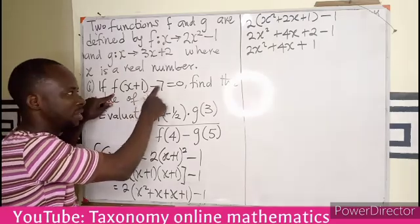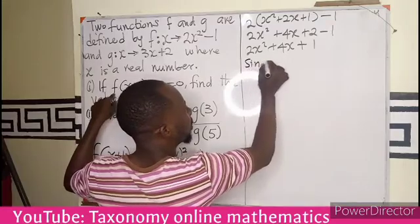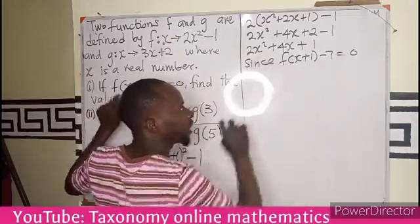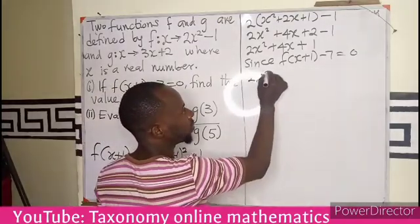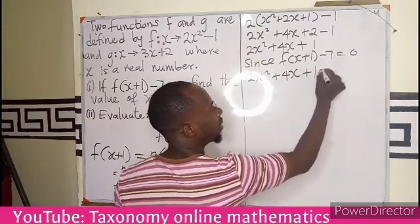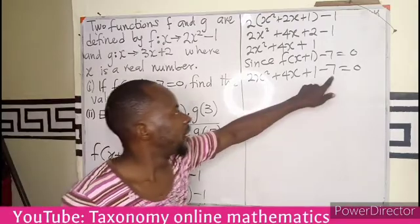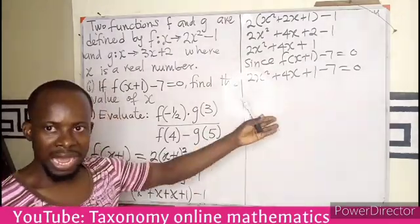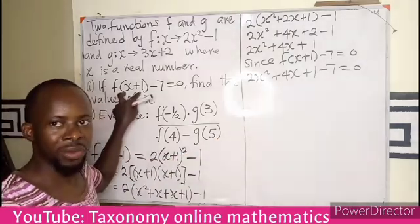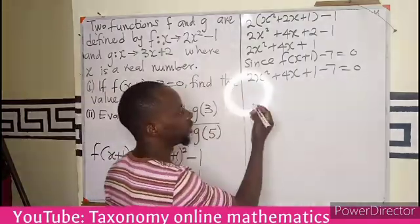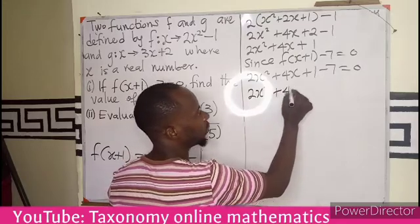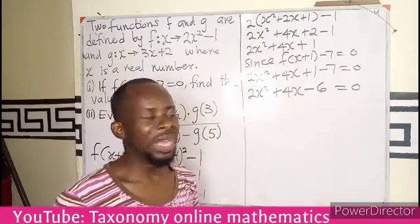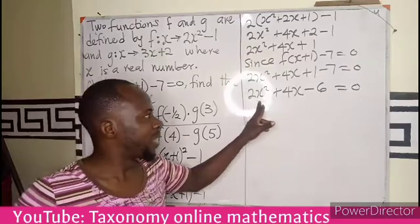Don't forget, it is having minus 7 equals to 0. So we replace the whole expression to get 2x squared plus 4x plus 1 minus 7 equals 0. You can introduce the minus 7 and 0 at the beginning and solve it together — you will end up getting the same thing. So now performing the operation: 2x squared plus 4x, and 1 minus 7 gives us minus 6, equals 0. So this becomes a quadratic equation because I have x squared, x, and a constant.